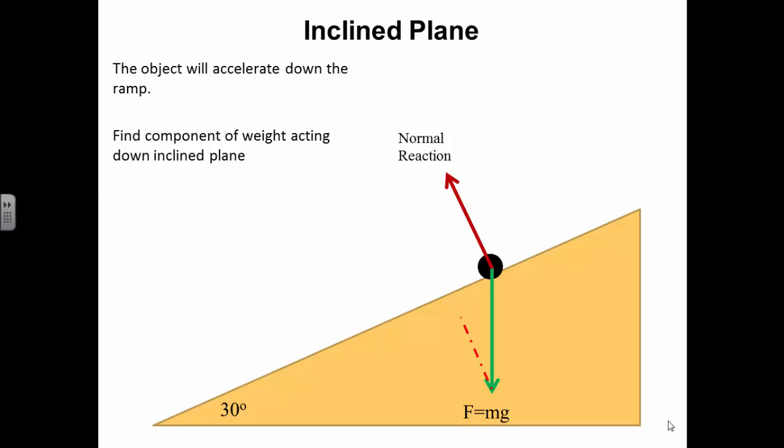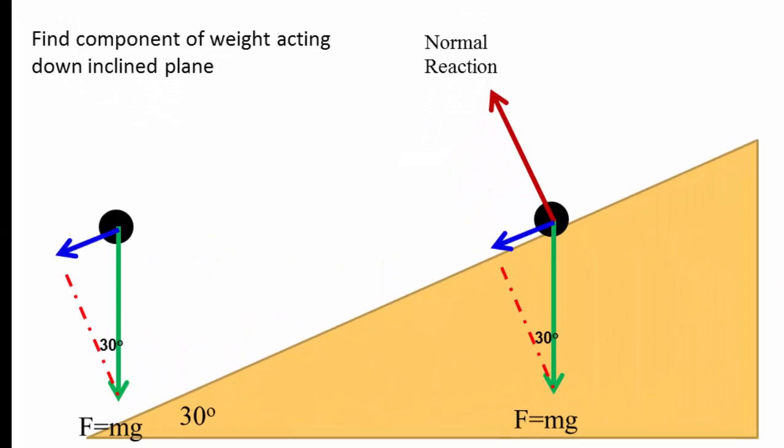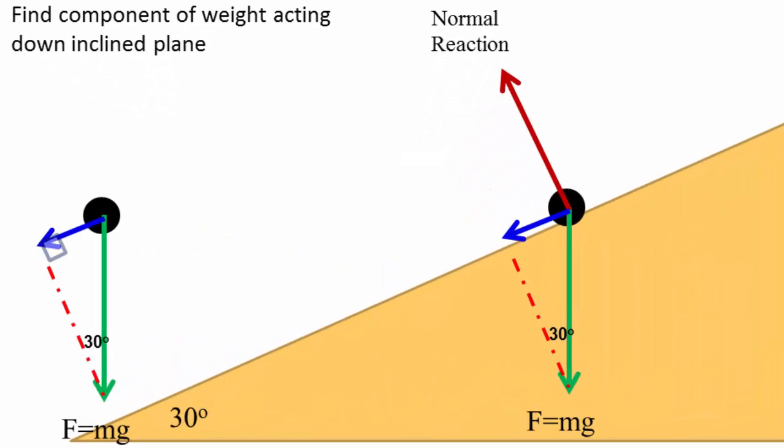So we need to draw this line up to the plane, and we now have a triangle which is a right angle triangle. This is the triangle. Remember it's the right angle. So we basically have to find a sine, cosine, or tangent ratio here.